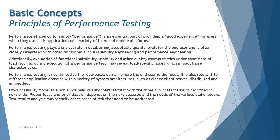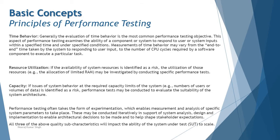The product quality model identifies performance as a non-functional quality characteristic with three sub-characteristics, which will be discussed here. These are the key parameters we generally consider in performance testing, and we measure an application against these three parameters. The three major parameters are: time behavior, resource utilization, and capacity.